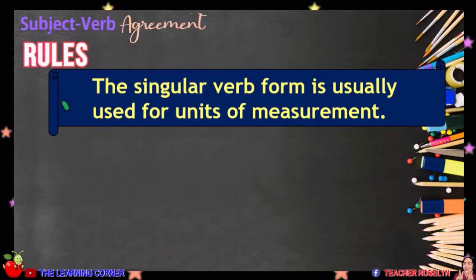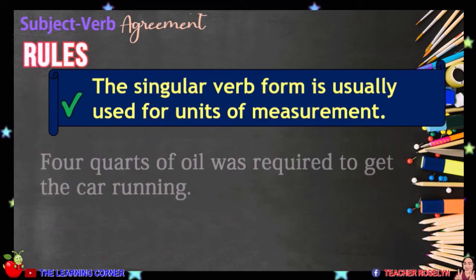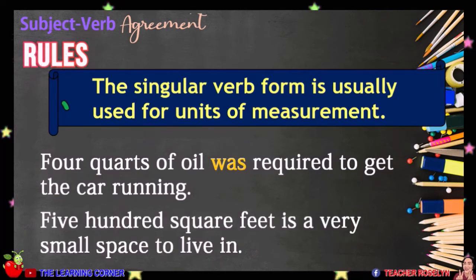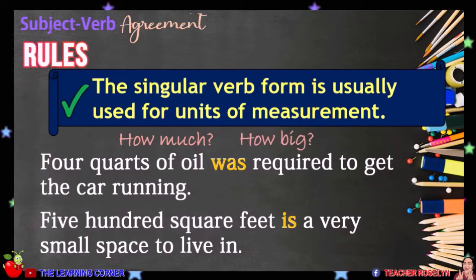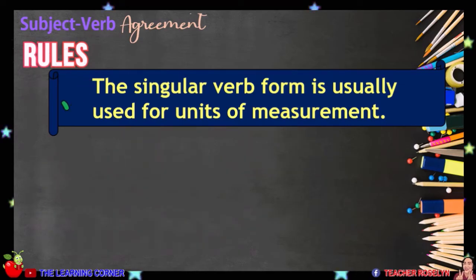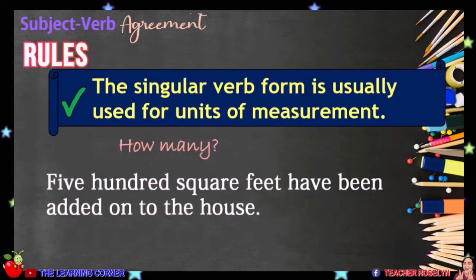The singular verb form is usually used for units of measurement. For example, four quarts of oil was required to get the car running. Five hundred square feet is a very small space to live in. Remember, if the subject answers the question 'how much' or 'how big,' it is usually singular. But if the sentence answers the question 'how many,' the subject is considered plural. For example, five hundred square feet have been added onto the house — how many square feet? Five hundred. So five hundred square feet is considered plural; therefore, we use the verb HAVE.